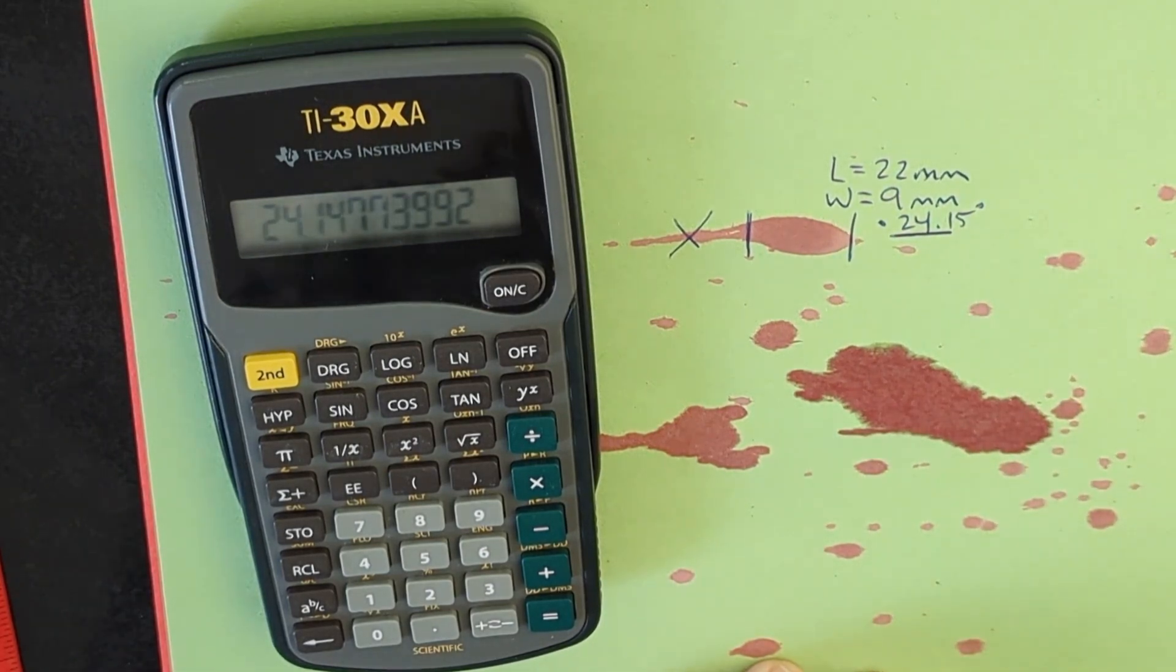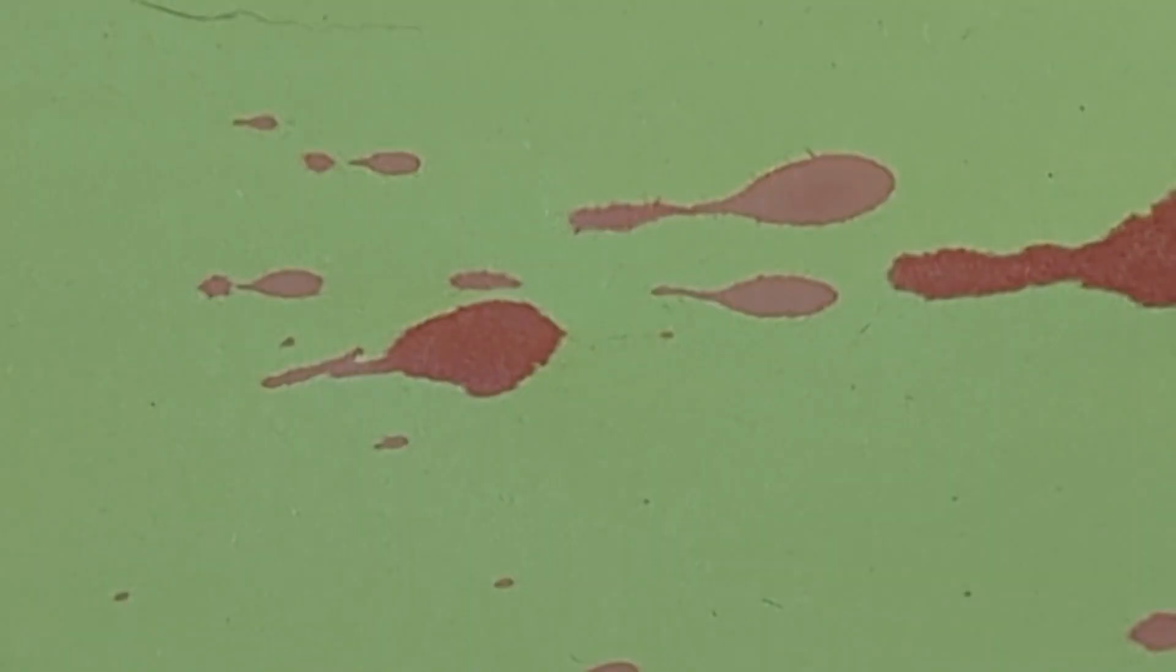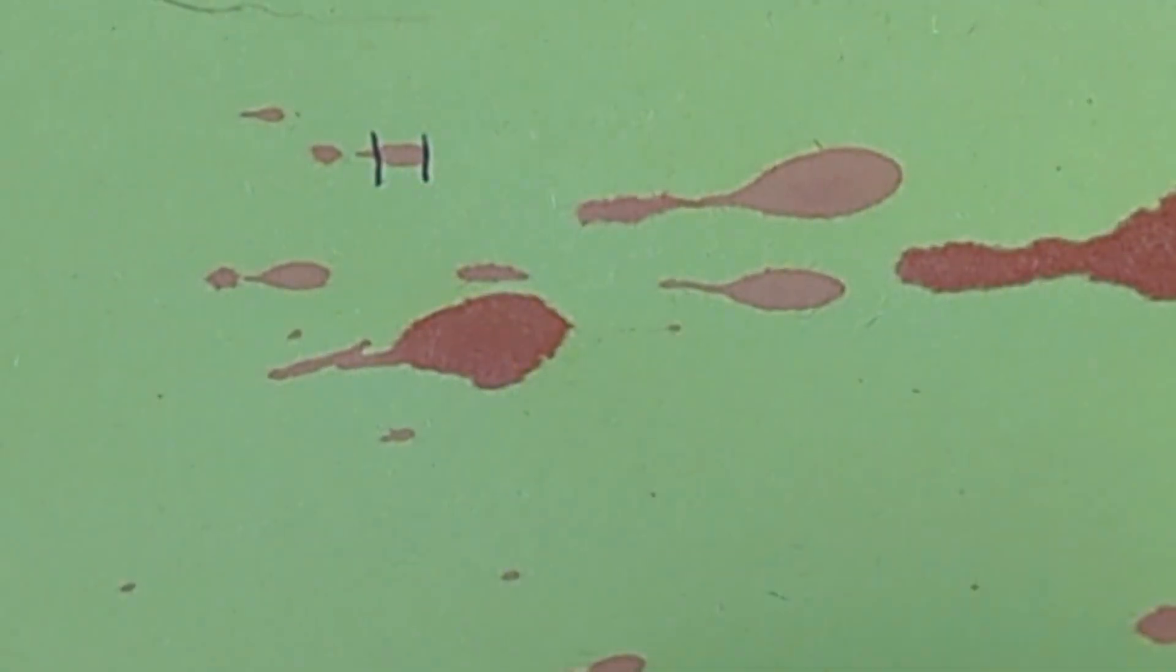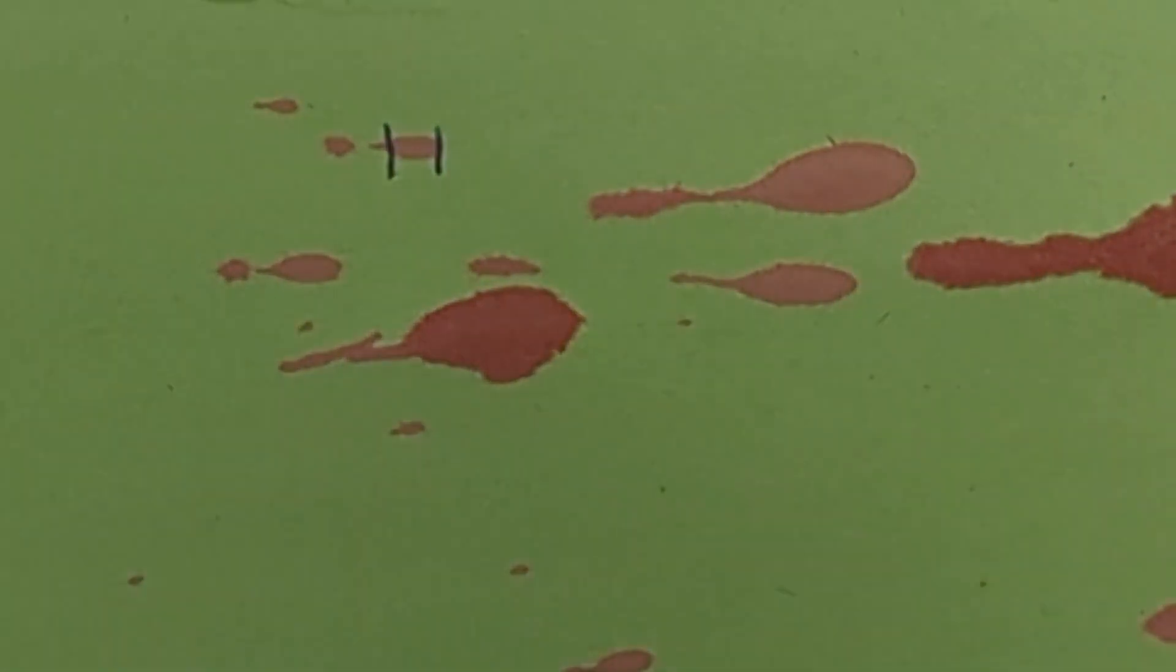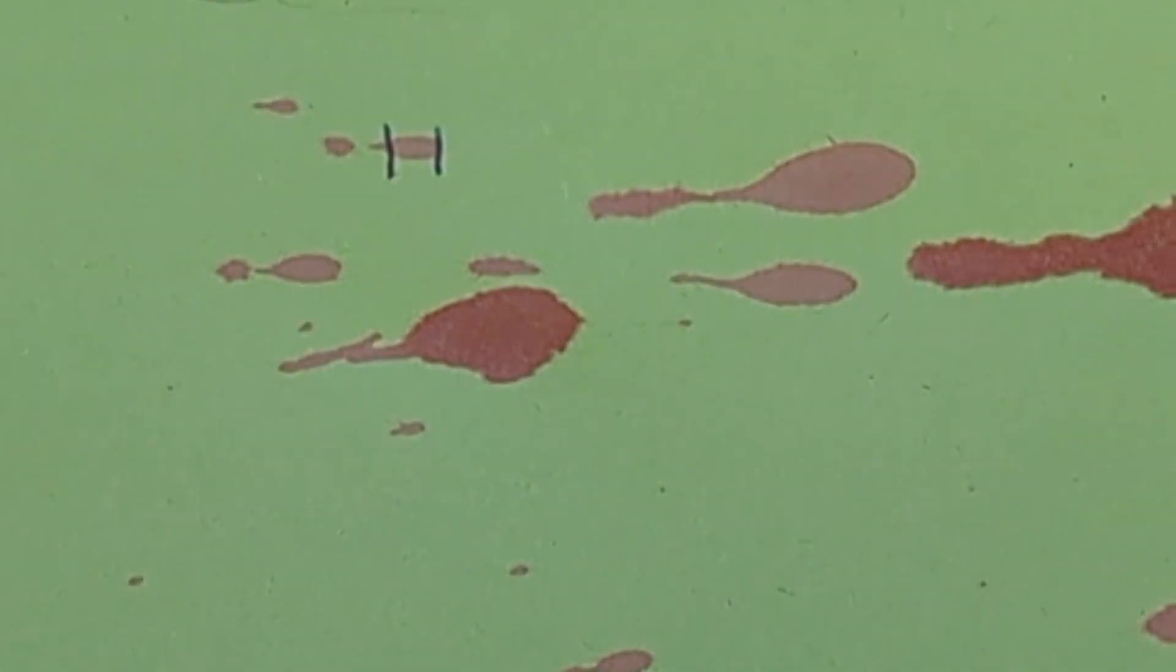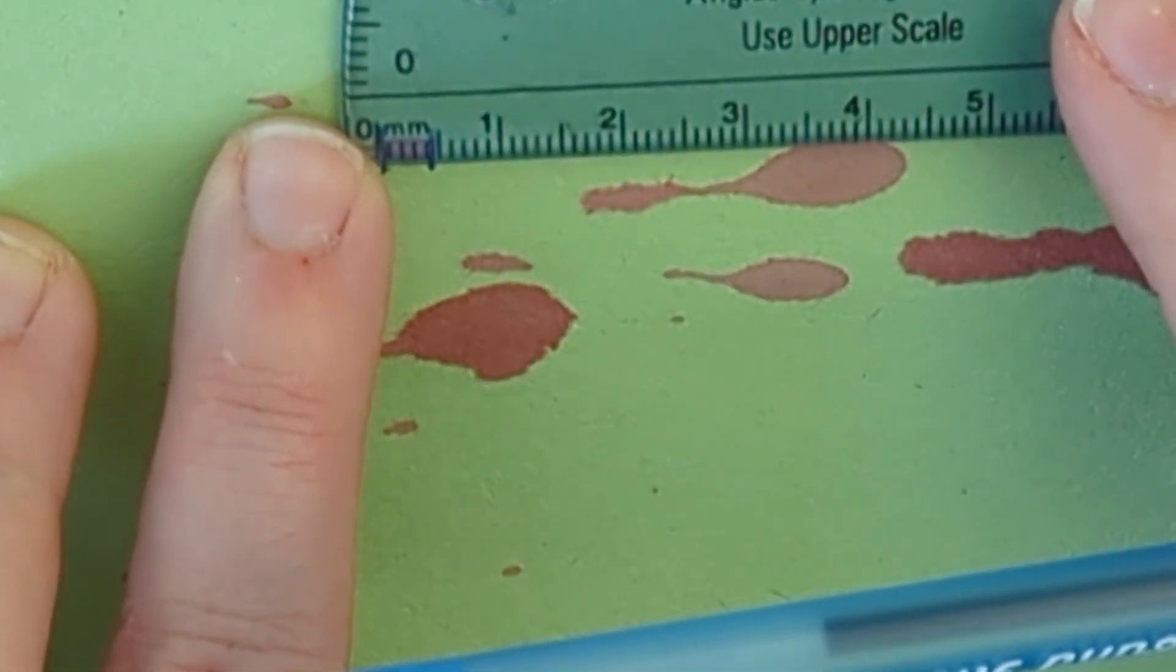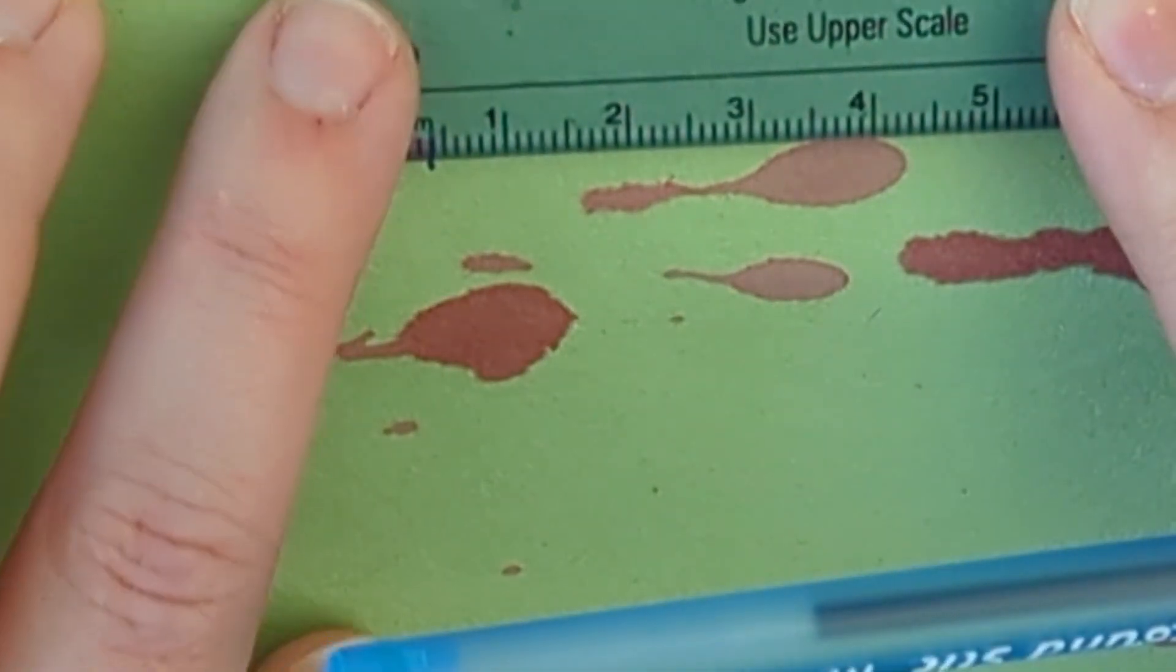You may be wondering what about the really tiny blood drops. Do I have to measure those? Most cases you're going to have tiny blood drops to work with. So again you're not going to include the tail, just the body. You're going to take your protractor to measure. Start at the zero.